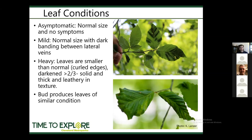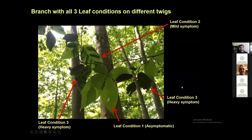One thing noticed is that buds producing leaves tend to produce leaves of similar condition. A great photo by Connie shows one bud that produced all asymptomatic leaves, but right next to it is a bud that produced heavy-symptom leaves, and another with mild symptoms. So all three symptom types can show up on the same branch, just on different twigs.